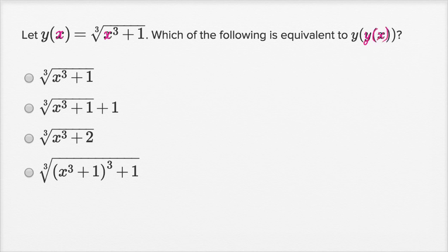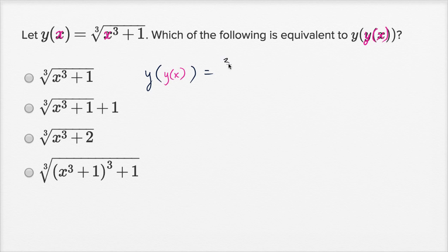To evaluate y of y of x, everywhere we see an x, we just replace it with y of x. It might seem a little bit daunting because it's referring to itself, but it should all make sense in the end. So we're going to have something to the third power plus one, and in this case that something is y of x.